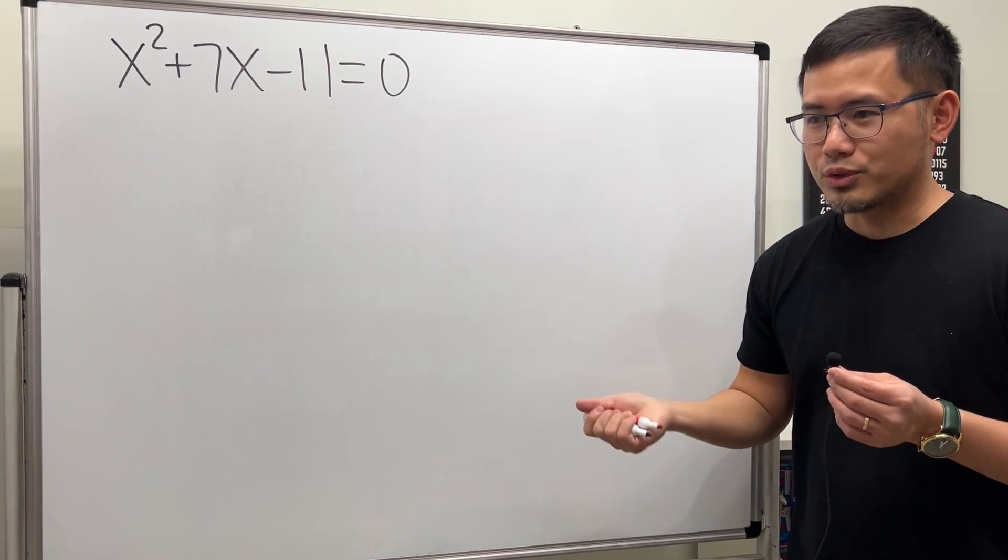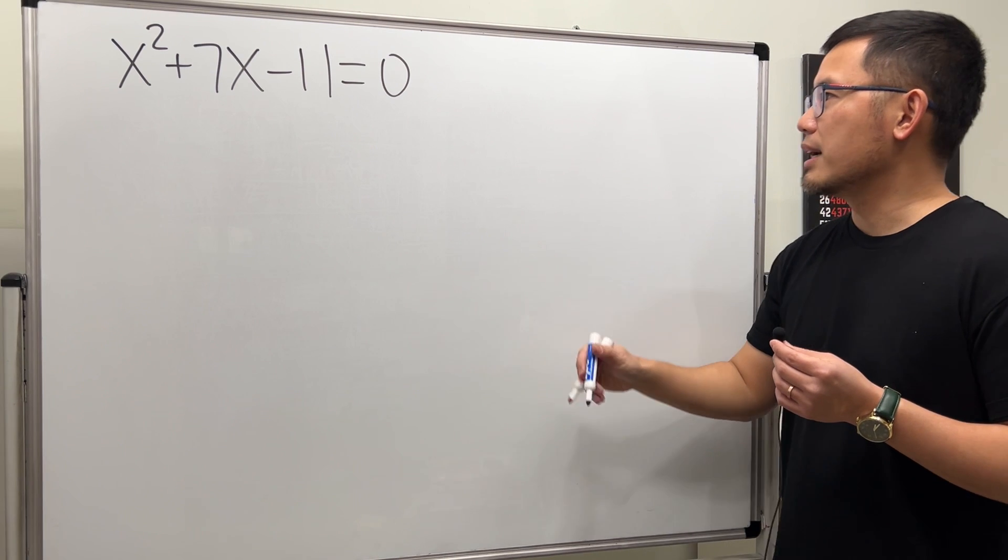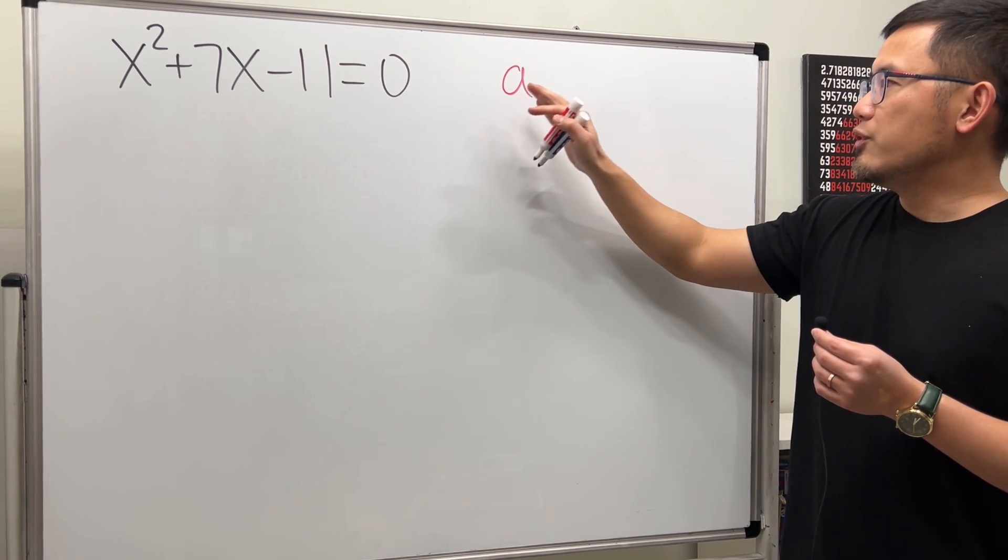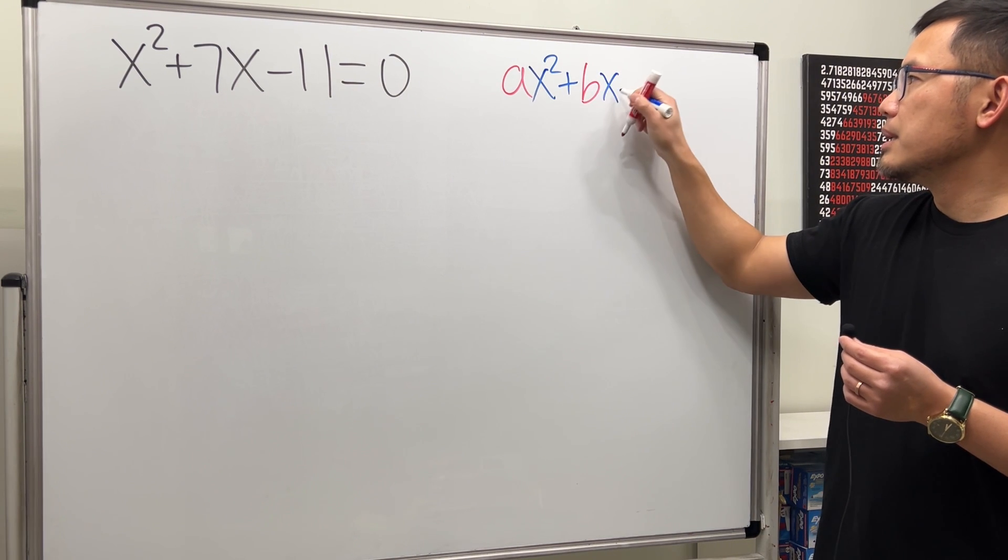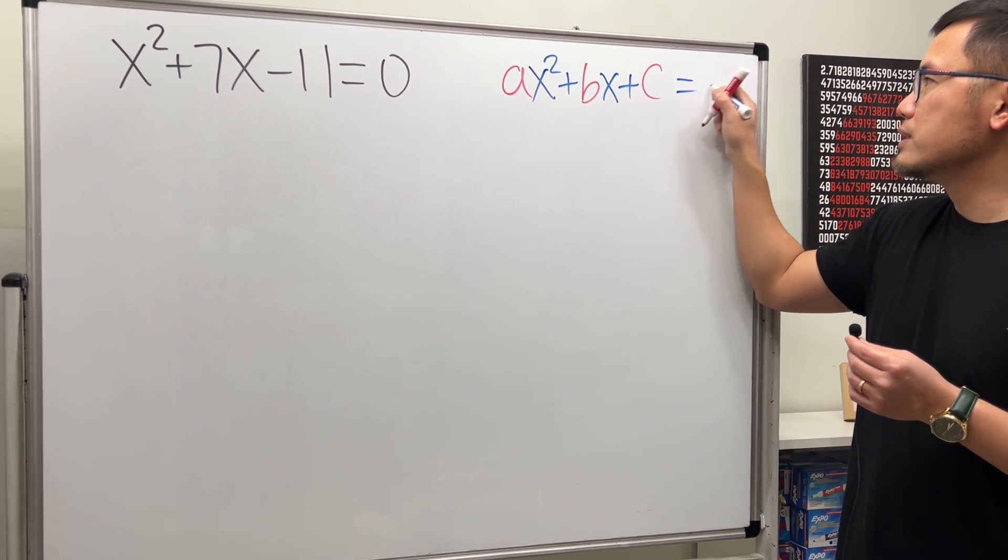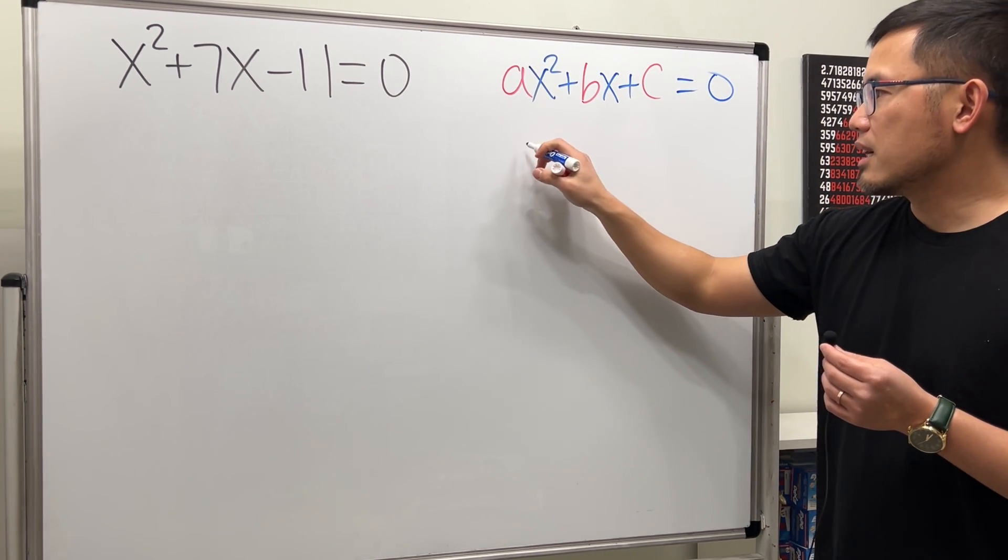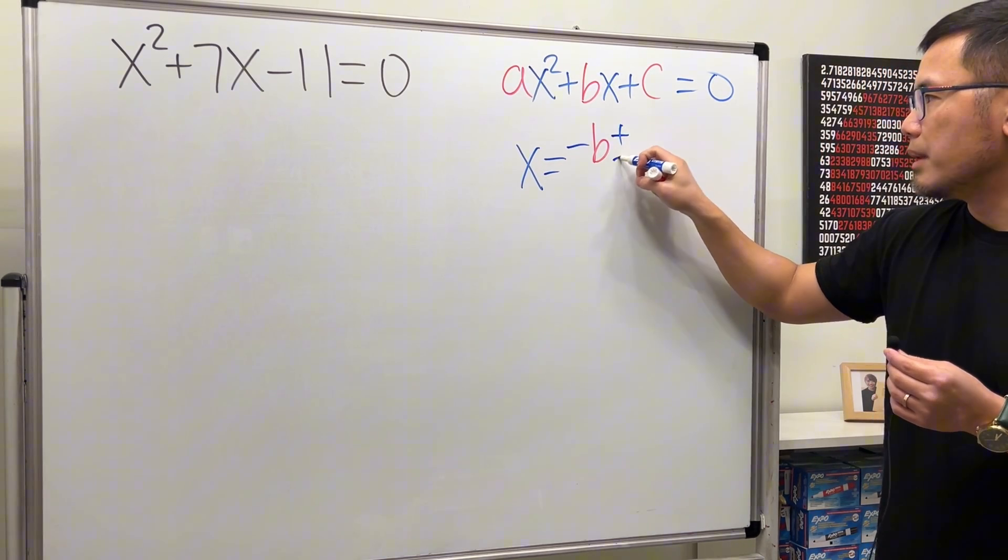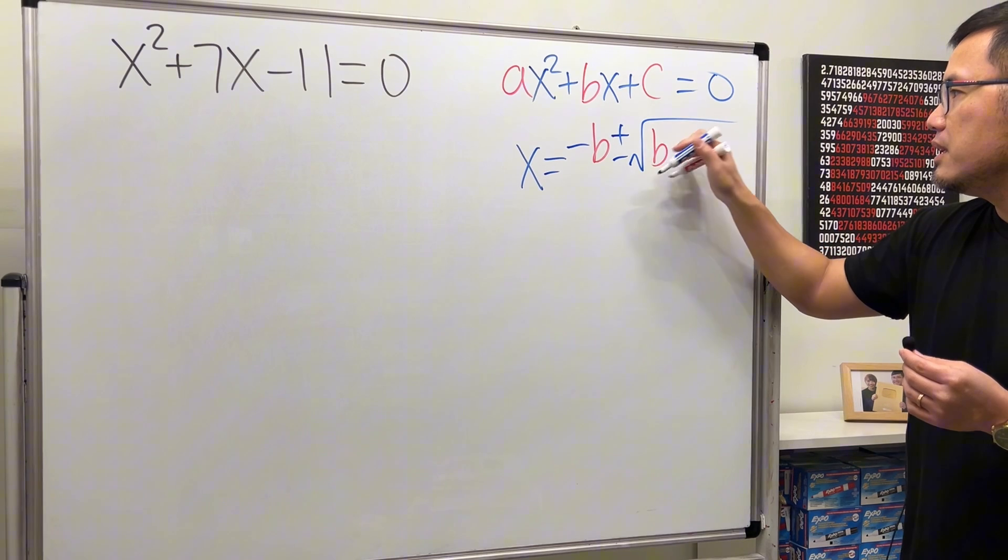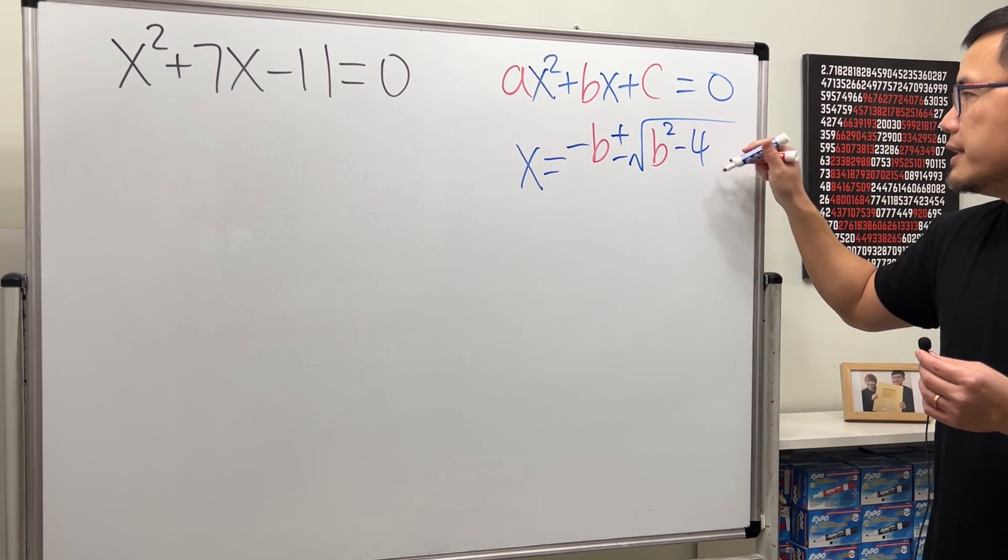Let me write this down for you guys. The formula says if we have ax² + bx + c = 0, then the classic quadratic formula says x = (-b ± √(b² - 4ac)) / 2a.